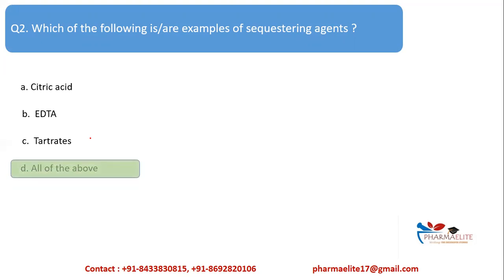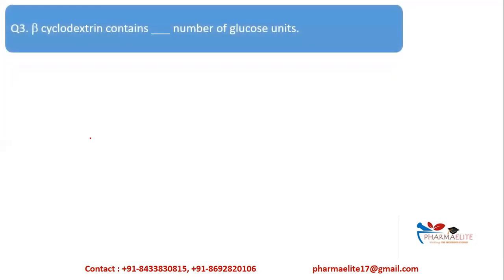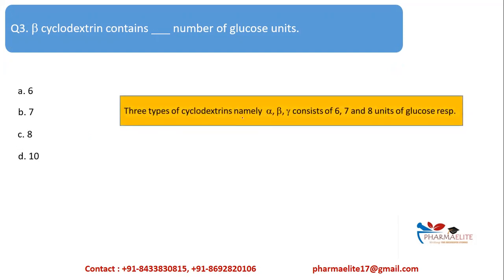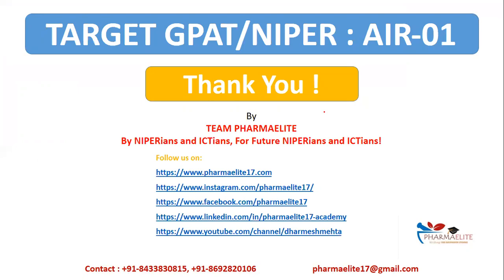Next MCQ: Beta-cyclodextrin contains how many glucose units — six, seven, eight, or ten? As mentioned, three types of cyclodextrins exist: alpha with six units, beta with seven, and gamma with eight, connected by 1,4-alpha linkage. Beta is being asked here, so the correct answer is option B — seven. Thank you for watching the video.